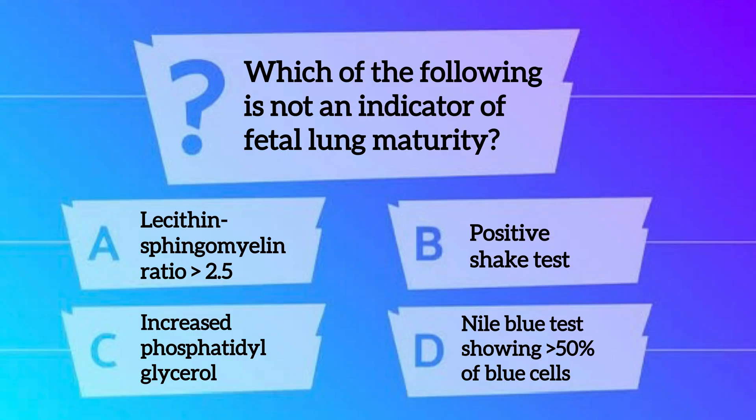Now let's solve our second question: which of the following is NOT an indicator of fetal lung maturity? A. Lecithin-sphingomyelin ratio more than 2.4. B. Positive shake test. C. Increased phosphatidyl glycerol. And D. Nile blue test showing more than 50% of blue cells. The correct option is Option D — Nile blue test showing more than 50% of blue cells.